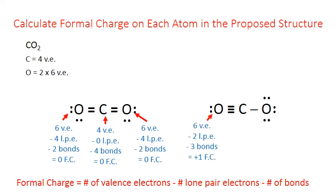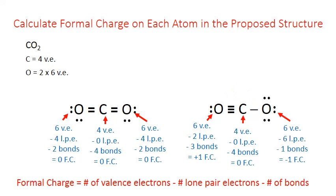Now for the other structure. The first oxygen has six valence electrons minus two lone pairs minus three bonds — six minus two minus three gives a formal charge of plus one. The carbon has four valence electrons, zero lone pairs, and still four bonds total — three on the left and one on the right — so four minus zero minus four equals zero. The last oxygen has six valence electrons, six lone pair electrons, and only one bond — six minus six minus one gives a formal charge of negative one.